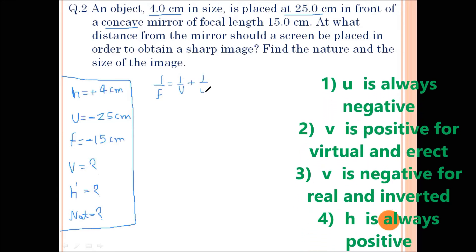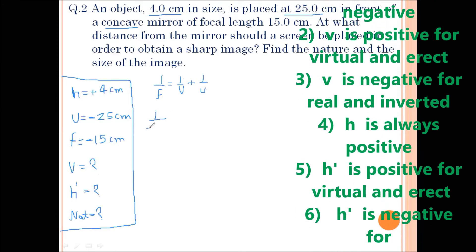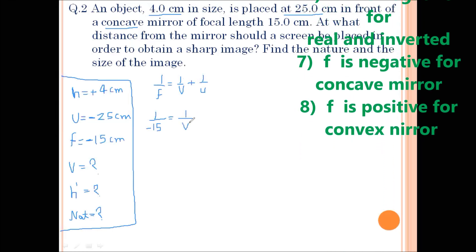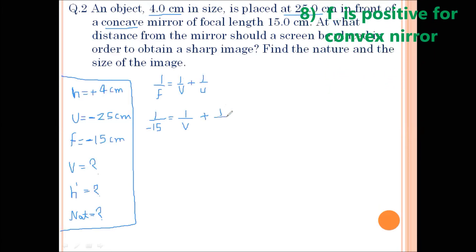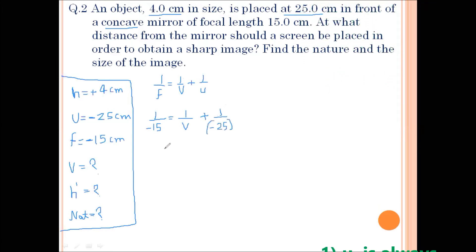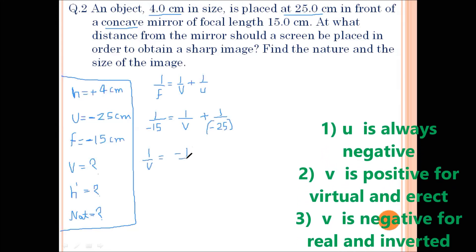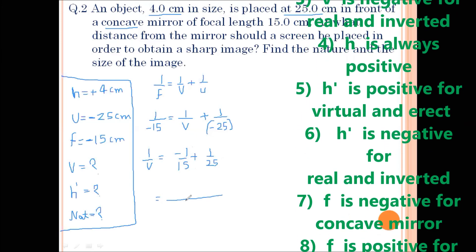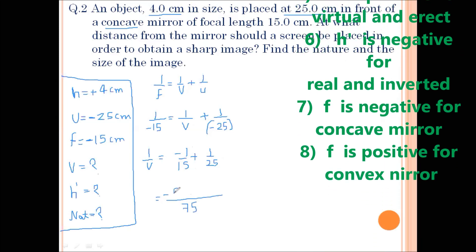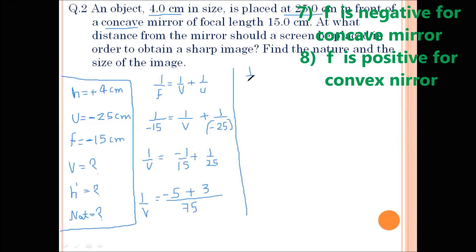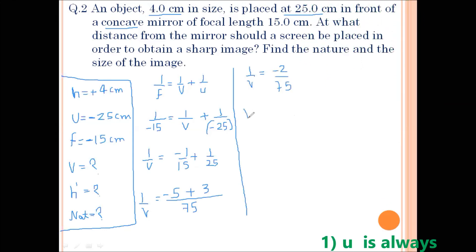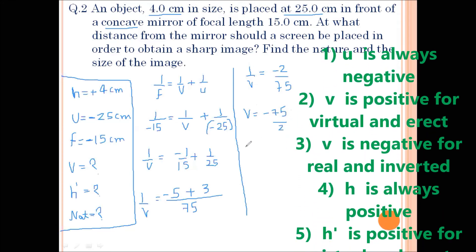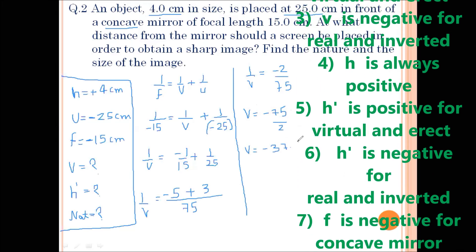Applying mirror formula 1/F = 1/V + 1/U and substituting values: −1/15 = 1/V + (−1/25). Rearranging: 1/V = −1/15 + 1/25. The LCM of 15 and 25 is 75, giving −5 + 3 = −2. So 1/V = −2/75, therefore V = −75/2 = −37.5 cm.